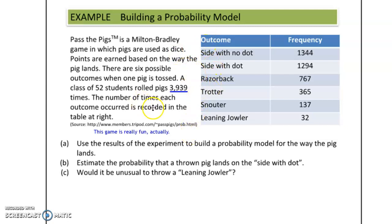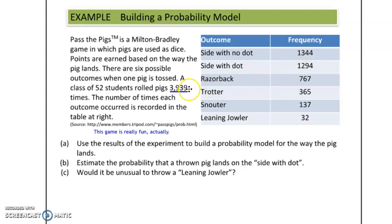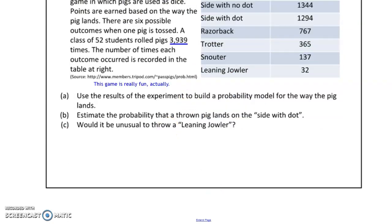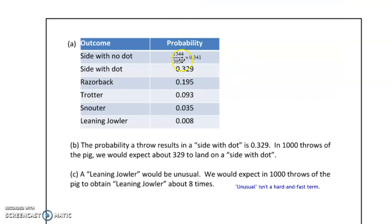These 52 students rolled the pigs almost 4,000 times and got these results. We can use these results to build a probability model for the way the pig lands. For example, the side with no dot came out 1,344 times out of 3,939. So we can figure out a probability based on that: 1,344 divided by 3,939. All of these probabilities are calculated by dividing by 3,939.